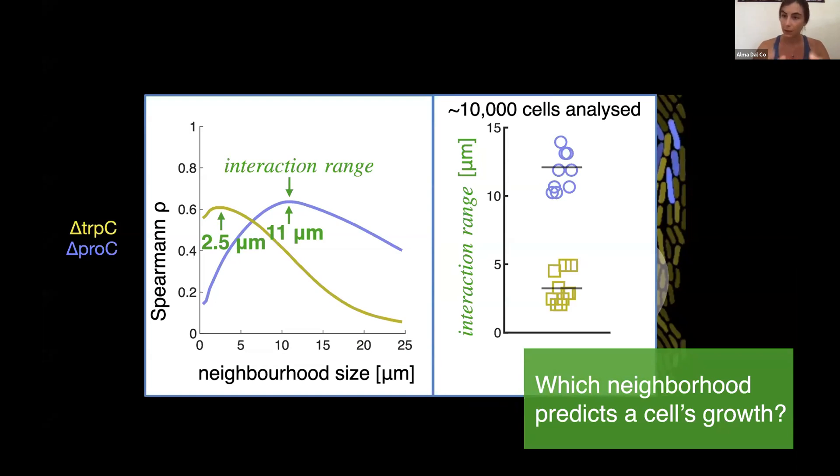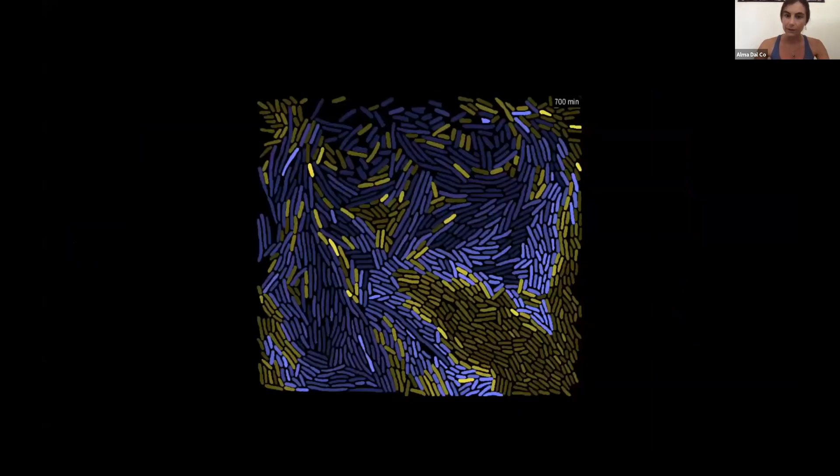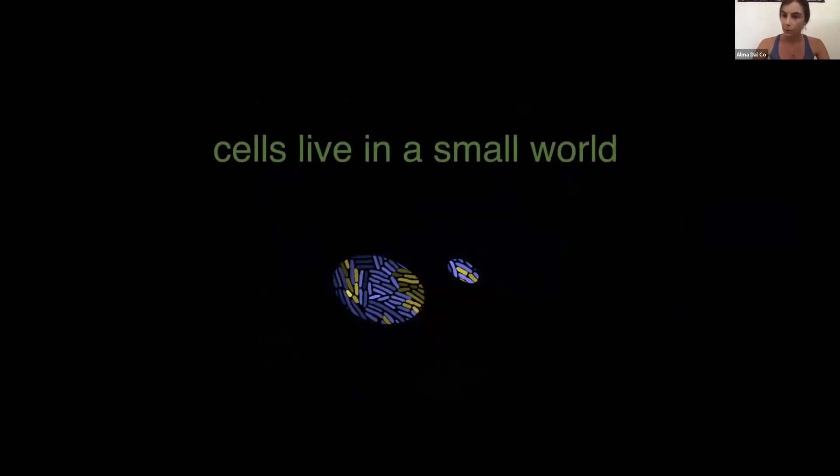While the yellow type interacts at about one cell length. So these interactions are very local. I like to think that these cells really live in a small world.